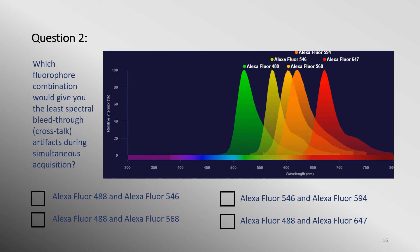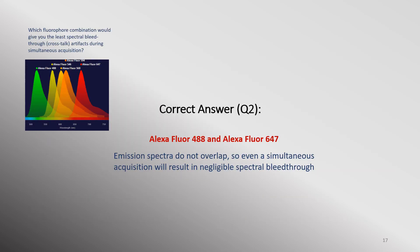This figure shows the emission spectra of several Alexa fluorophore dyes. Which fluorophore combination would give you the least spectral bleed-through or crosstalk artifacts during simultaneous acquisition? Alexa Fluor 488 and 546, Alexa Fluor 488 and 568, Alexa Fluor 546 and 594, or Alexa Fluor 488 and 647? Under ideal simultaneous acquisition conditions, you should choose fluorophores that have the least amount of spectral overlap, and this is accomplished with a pair of Alexa Fluor 488 and 647.